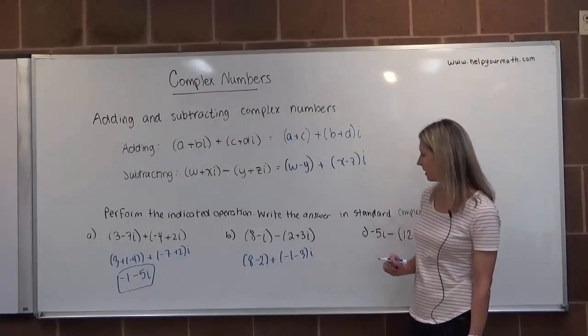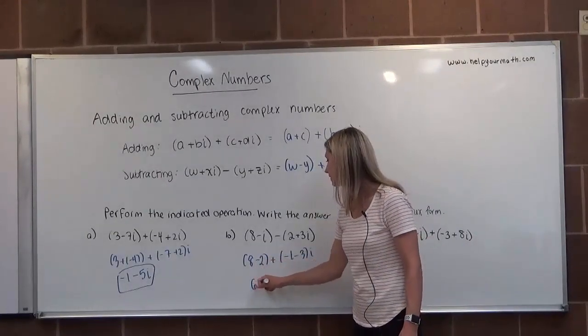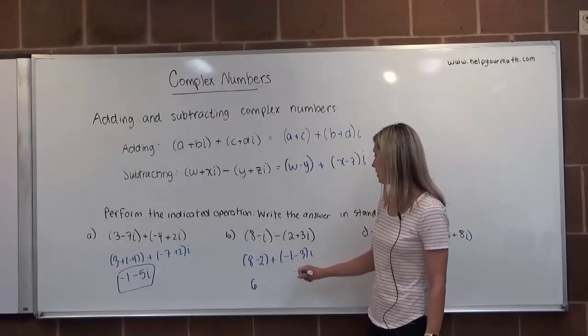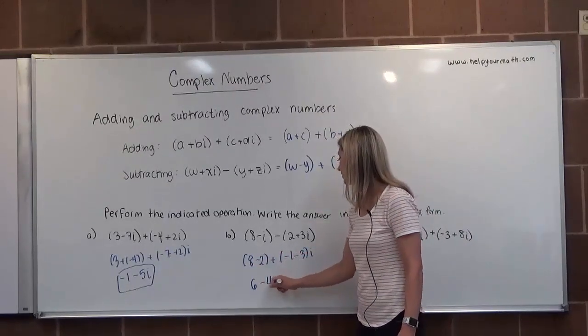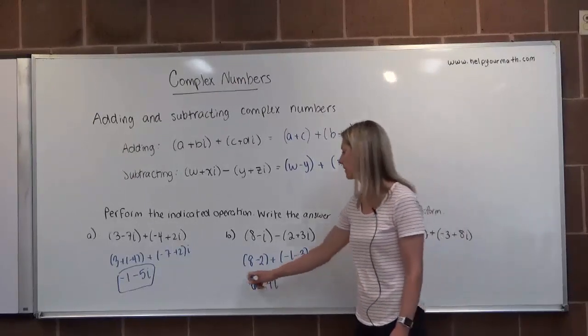Now we're going to combine our numbers here. 8 minus 2 is 6 and negative 1 and negative 3 is negative 4. So we get 6 minus 4I as our difference in letter B.